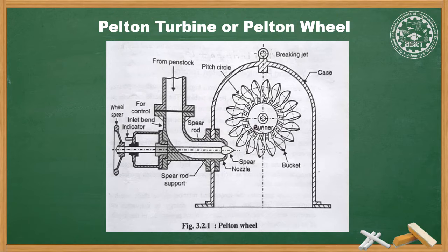The second part is the nozzle. The nozzle is the passage for flow of water. One or more nozzles are provided to adjust the amount of water; a high-velocity jet impinges tangentially to the pitch circle of the runner. The jet of water splits into two equal streams and flows around the inner surface of the cup, leaving at the outer surface. The jet deflects through 160 to 170 degrees without mixing with the inlet jet.